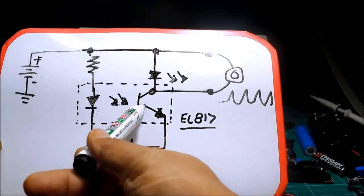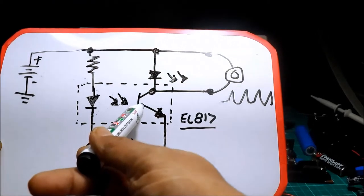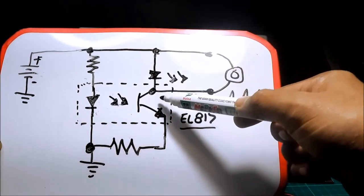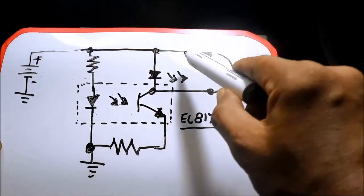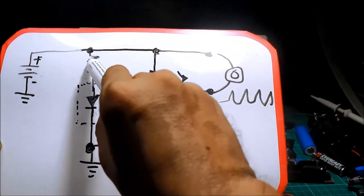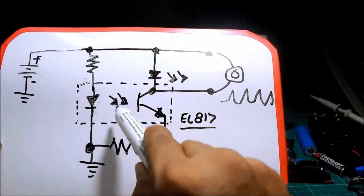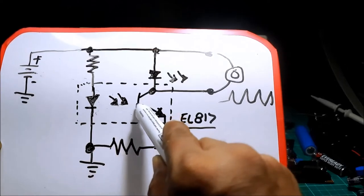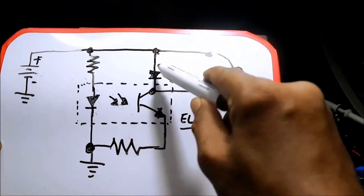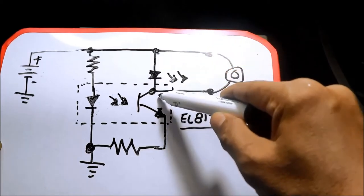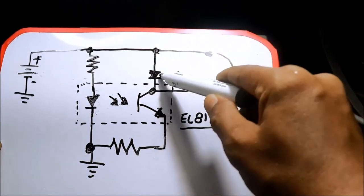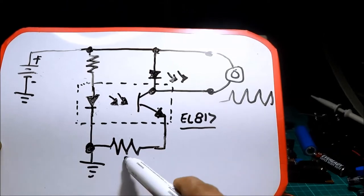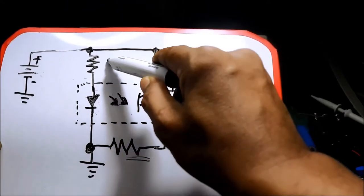Pag na-forward bias o na-switch on itong transistor sa base, ito yung base niyo, saka lang makakadalo yung kuryente dito sa collector to emitter. So pag nag-switch on dito sa base, kasi ito iilaw, tatamaan yung base ng transistor, makakadalo yun yung kuryente ng LED papunta sa ground. May current limiter na resistor dito, saka dito.